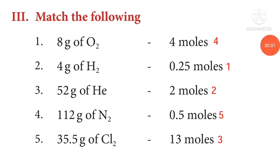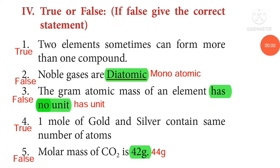Match the following: 8 gram of oxygen equals 0.25 moles, 4 gram of hydrogen equals 2 moles, 52 gram of helium equals 13 moles, 112 gram of nitrogen equals 4 moles, 35.5 gram of chlorine equals 0.5 moles.